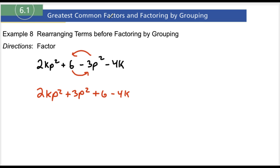I put parentheses around the first two terms, parentheses around the second pair of terms. The GCF right here, they both have a p² in common. So now I'm gonna have 2k plus 3.